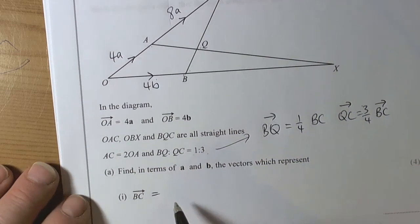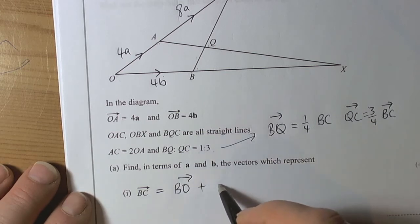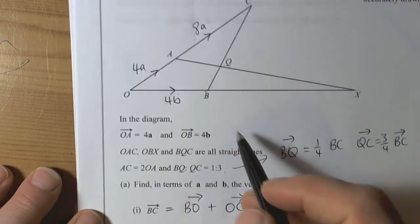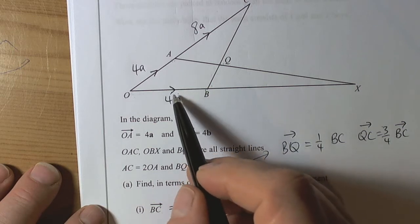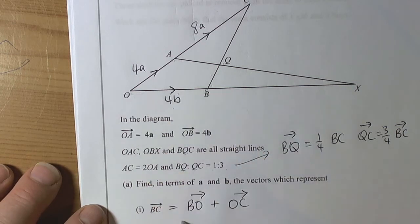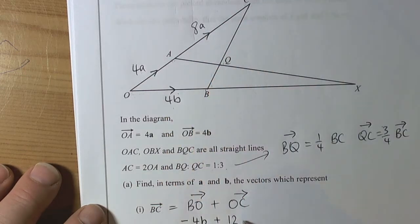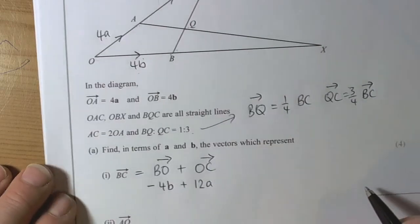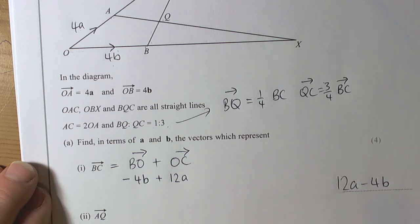So BC is going to be the same journey as going from B to O plus O to C. The only thing to remember is that when we're going against a direction vector, we do the negative of the vector. So B to O is going to be negative 4b. O to C we can see is 4a plus 8a, so that's 12a. So our answer is 12a minus 4b. We tend to put the positive bits first — that's a common convention for vectors.